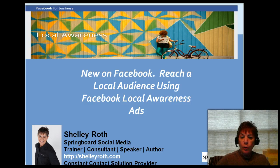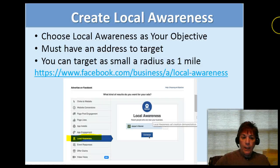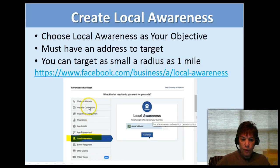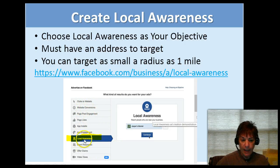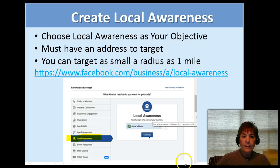It's called Local Awareness and it looks like this. When you go in to select the ad that you want — we've seen clicks to website, getting more likes — and now you'll see a line called Local Awareness. When you select that, you'll be able to go in there and decide all the way down to one mile what you want to target.